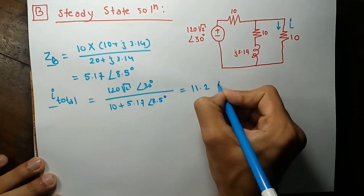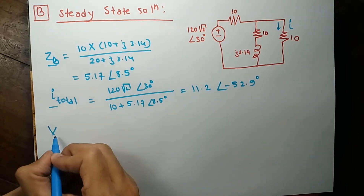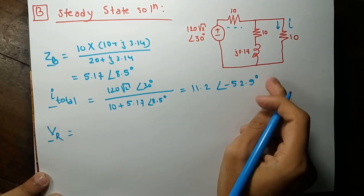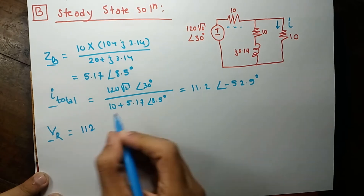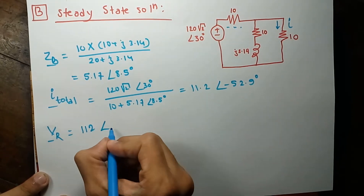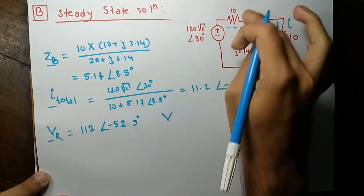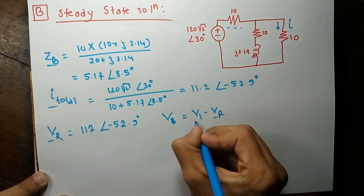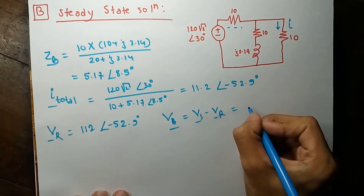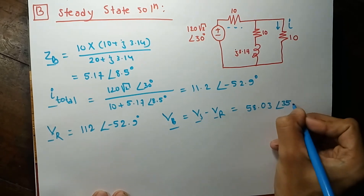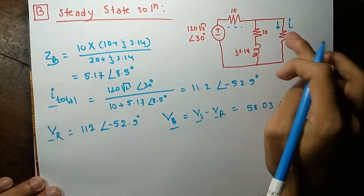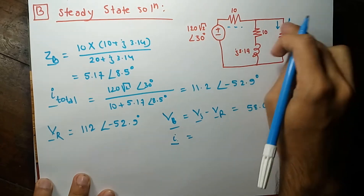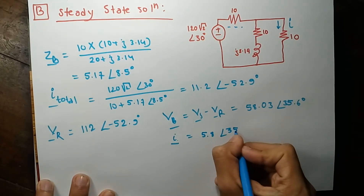That gives a result of 11.2 at an angle of 152.9 degrees. This current is going through this resistance, so the voltage drop across the resistance will be 11.2 — giving 112 at an angle of minus 52.9 degrees. The voltage drop across this branch will be the total voltage Vs minus Vr, and the answer turns out to be 5.803 at an angle of 35.6 degrees. This is the voltage across this resistance, so the current through this resistance is simply this divided by 10, giving 5.8 at an angle of 35.6 degrees.